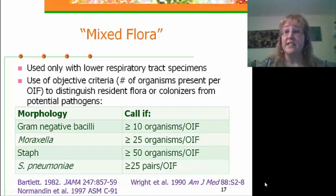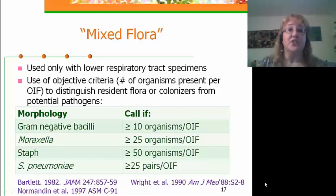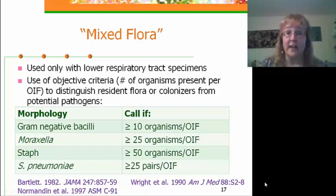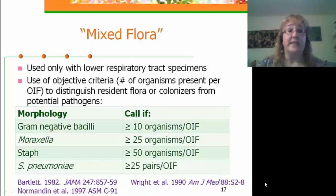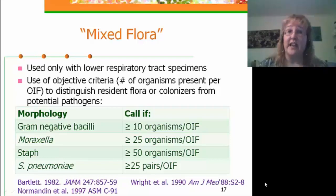Using the mixed flora concept, if lower numbers of organisms are present, this may indicate resident flora or colonization. We need to see at least 10 or more gram-negative bacilli per oil immersion field to actually report them. For Moraxella, we need at least 25 organisms per oil immersion field. For Staph, at least 50. And for Streptococcus pneumoniae, at least 25 pairs per oil immersion field.